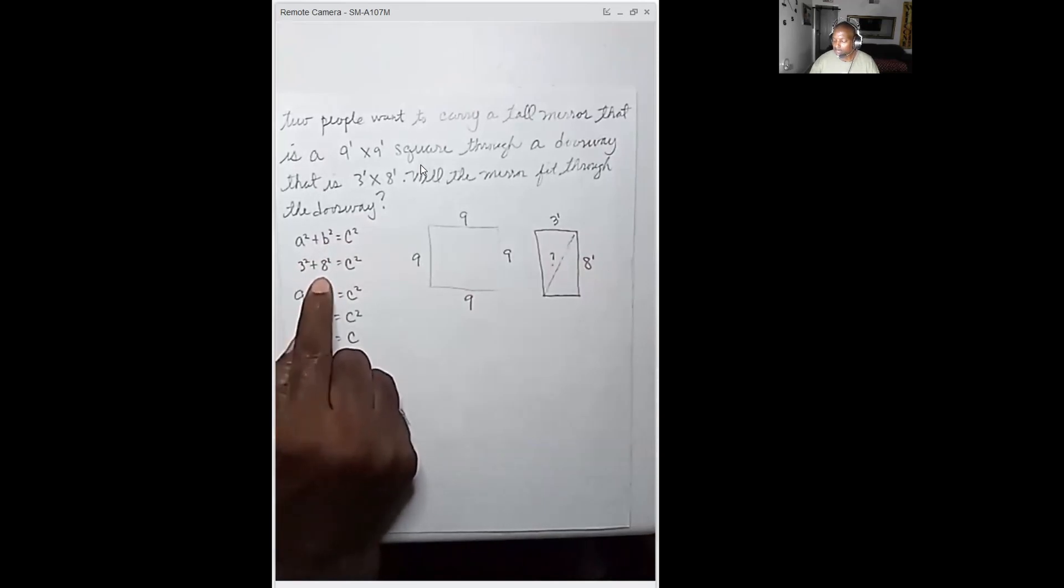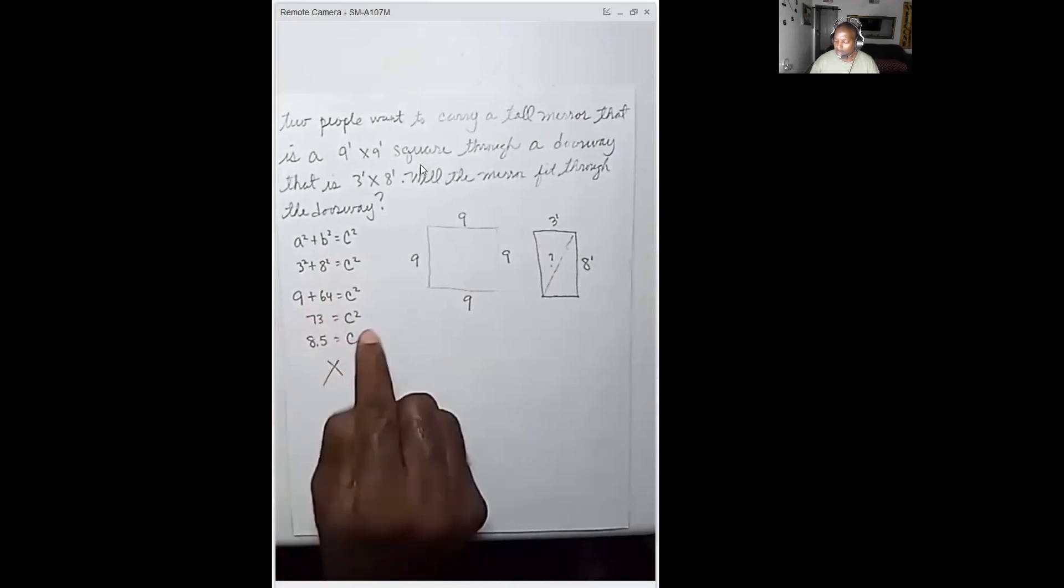Three squared plus eight squared equals C squared. Nine plus 64, just as I guessed, I visualized - that's going to give me the 73. And square root of 73, we know the square root of 81 is 9, so the square root of 73 is going to be less than 9.